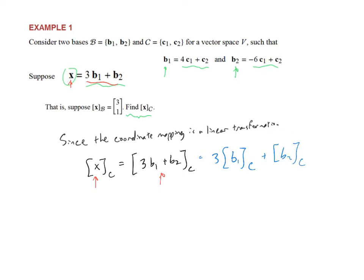Now I can take this vector equation and write it differently as a matrix equation. The matrix has first column b1 relative to c, and second column b2 relative to c — all that as a matrix times the vector (3, 1). So I'm writing my vector equation as a matrix equation.